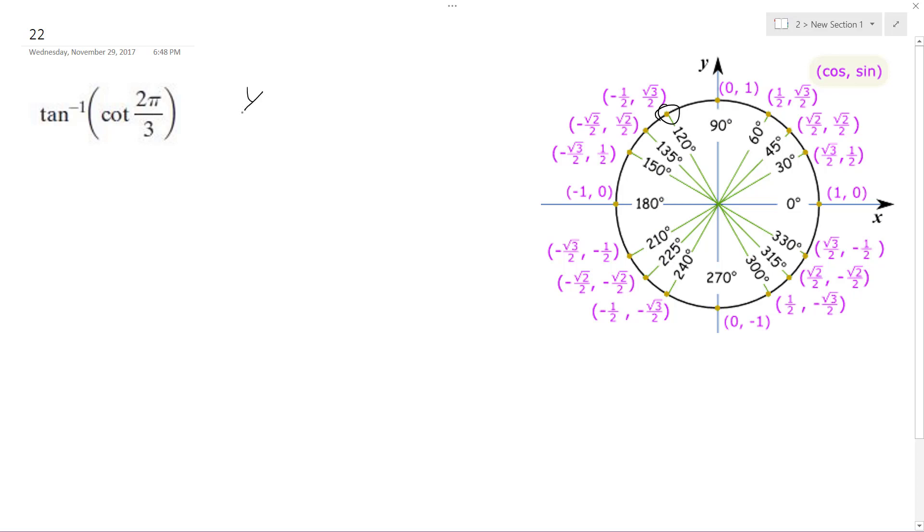Which is x over y. So that's equal to negative 1 over root 3. We'll just leave it in this form, we don't need to rationalize it yet.